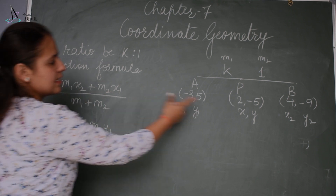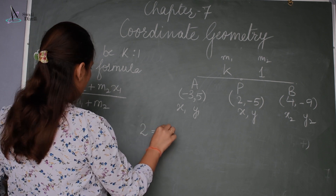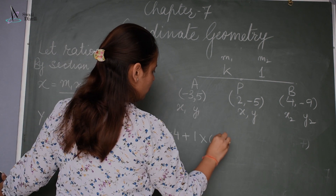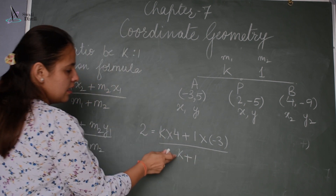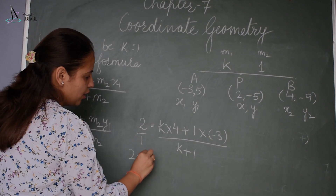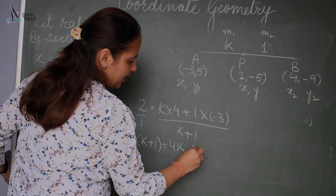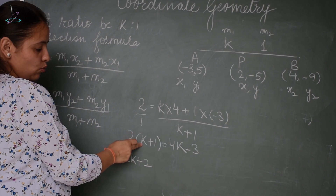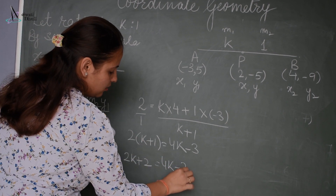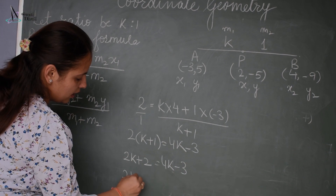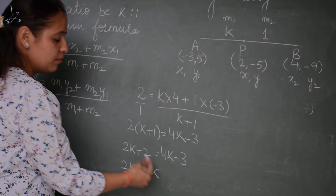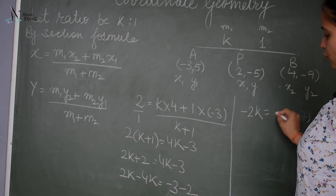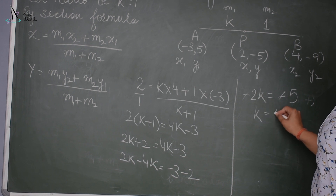Substituting in the x-coordinate: 2 = (k×4 + 1×(−3)) / (k + 1). Cross-multiplying: 2(k + 1) = 4k − 3, so 2k + 2 = 4k − 3. Rearranging: 2k − 4k = −3 − 2, giving −2k = −5, so k = 5/2.